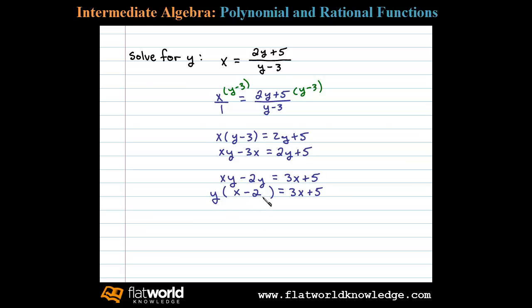To isolate y, all that's left to do is divide both sides by x minus 2, and that'll leave us with y equals 3x plus 5 over x minus 2.